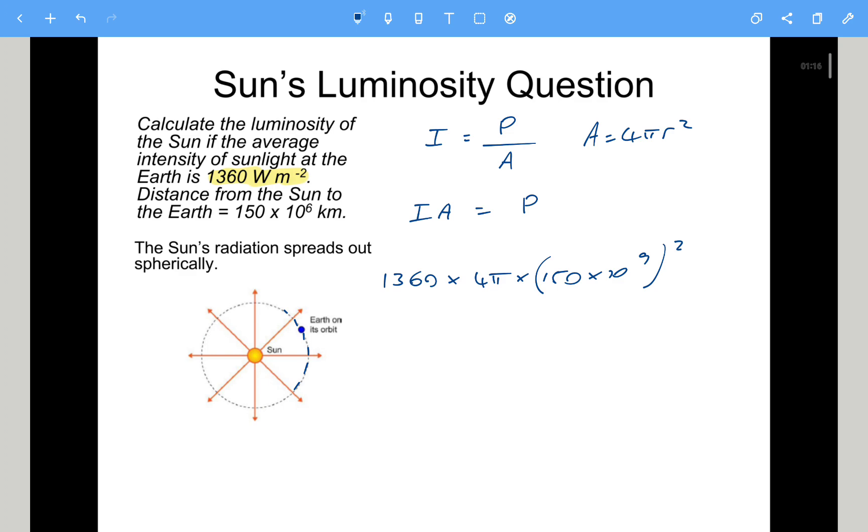So it's 4 pi r squared, which is the area multiplied by the intensity. And if you put that in your calculator, that will give you the power output, which is 3.85 times 10 to the power of 26 watts, which is obviously an outrageously big number.